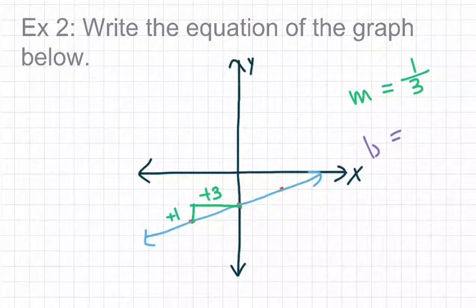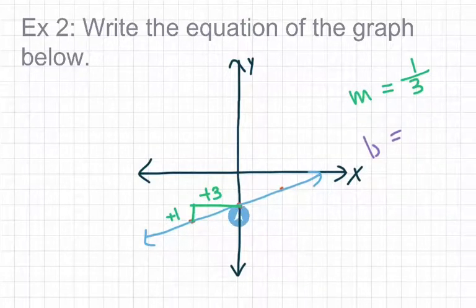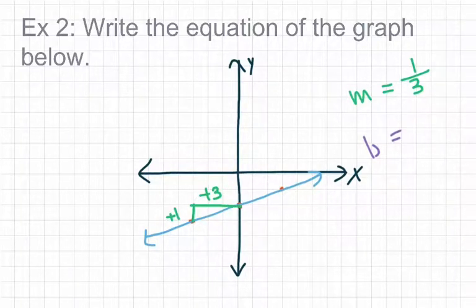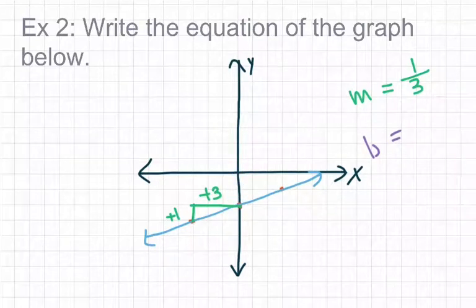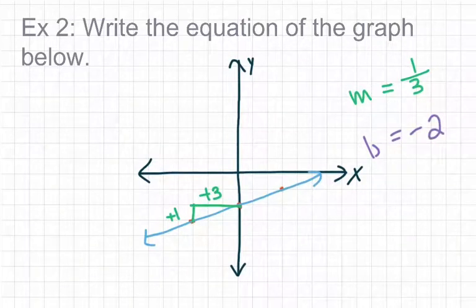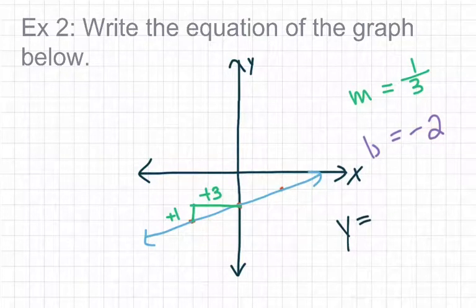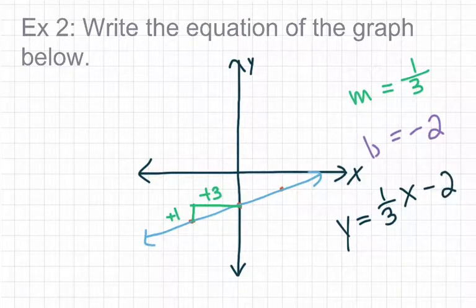For the y-intercept, I trace the line to where it crosses the y-axis. I count down from the origin: 1, 2. Because I count down 2, my y-intercept has a value of negative 2. So the equation of this line is y equals one-third x minus 2.